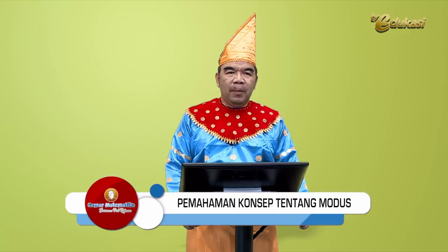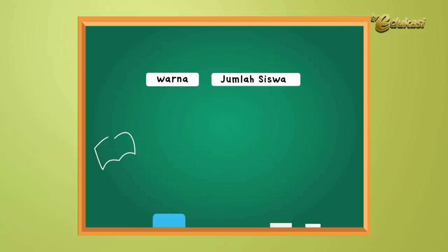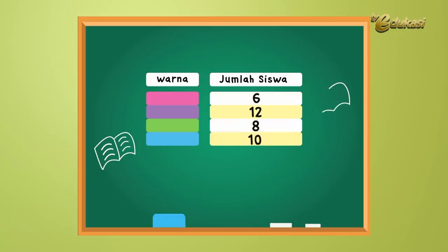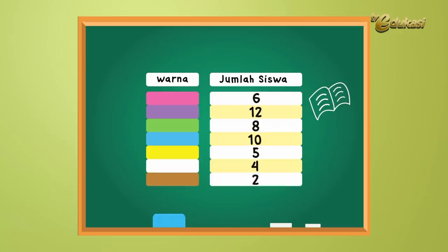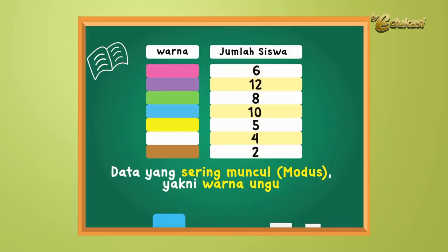Bapak sekarang akan menerangkan pemahaman konsep tentang modus. Berikut merupakan warna-warna yang disukai oleh teman-teman di kelas: merah muda sebanyak 6 orang, ungu sebanyak 12 orang, hijau sebanyak 8 orang, biru sebanyak 10 orang, kuning sebanyak 5 orang, putih sebanyak 4 orang, coklat sebanyak 2 orang. Data yang paling sering muncul disebut modus. Yang mana? Betul, yang warna ungu, karena ada 12 orang.